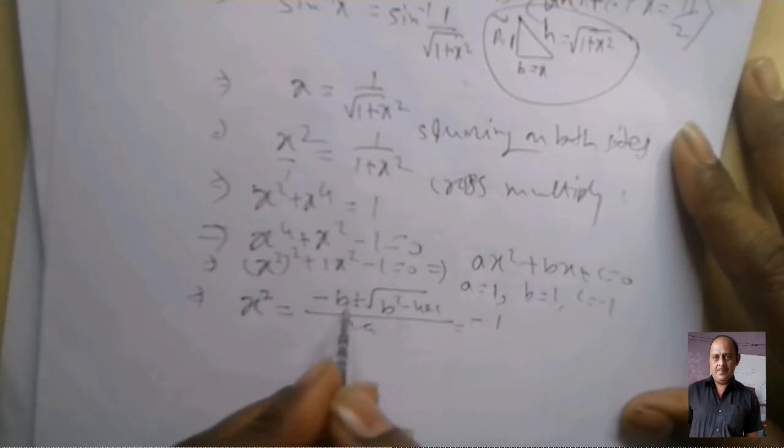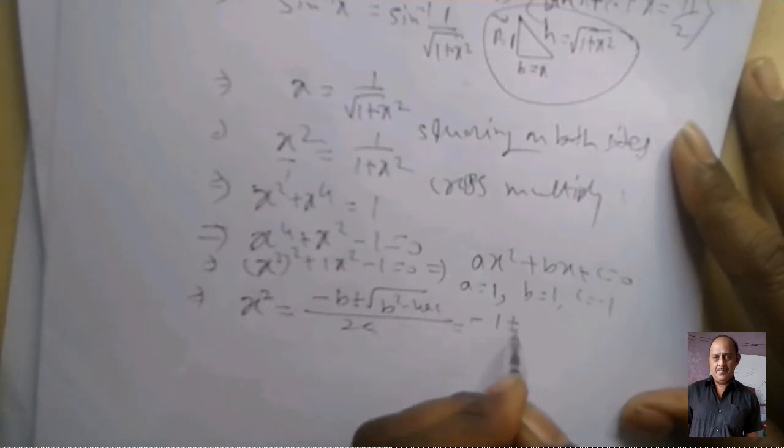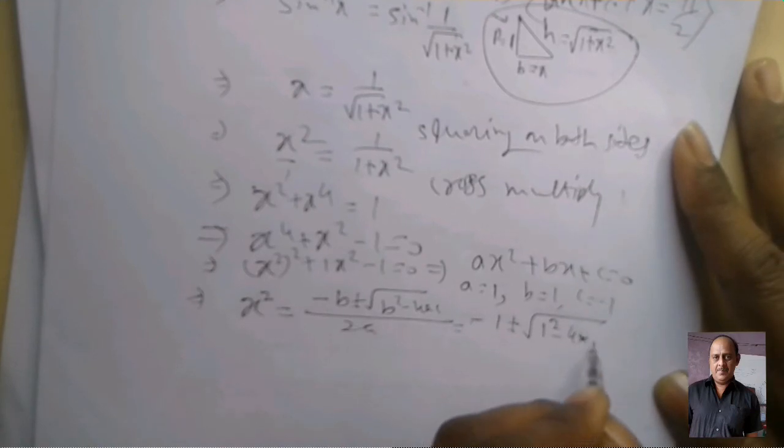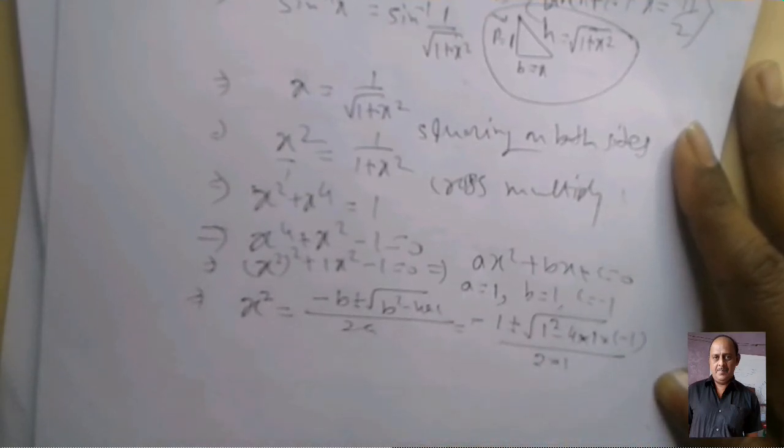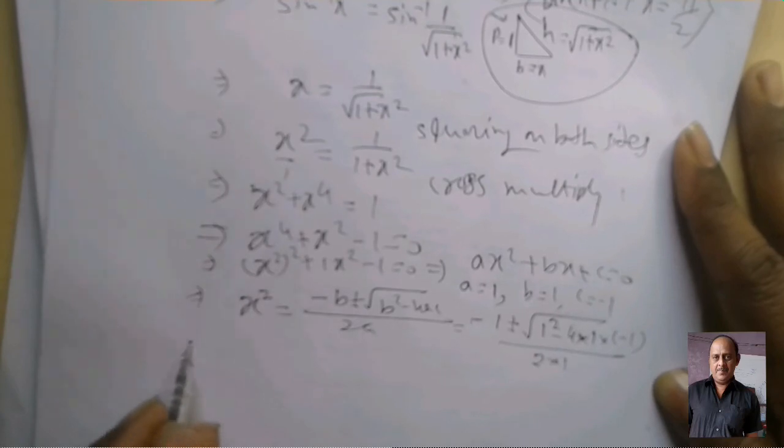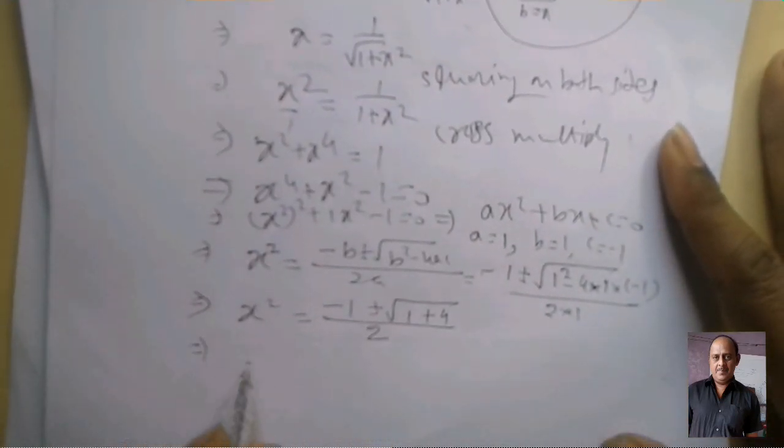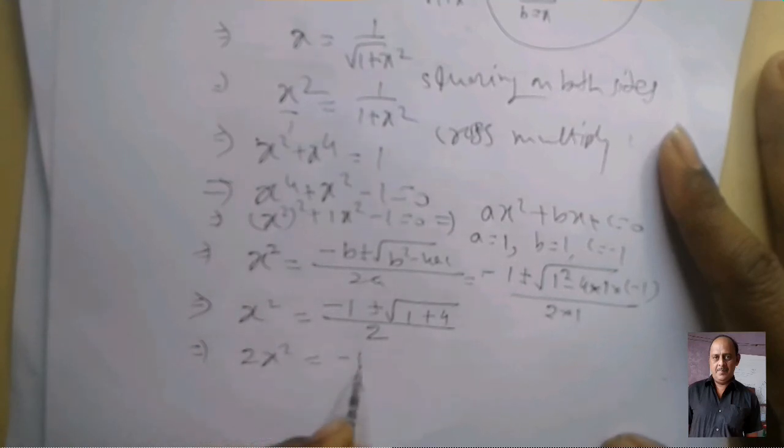Then minus b value, value of b is 1, plus minus root 1² minus 4 into a(1) into minus 1, upon 2a. x² equal minus 1 plus minus 1 plus 4 upon 2. x² equal minus 1 plus minus root 5. x² plus 1 equal plus minus root 5.